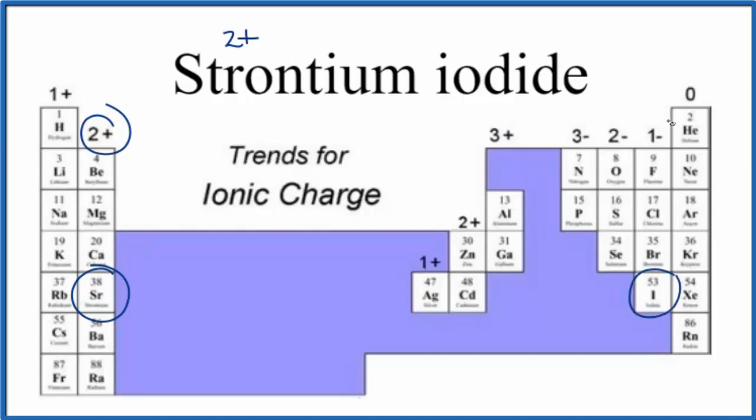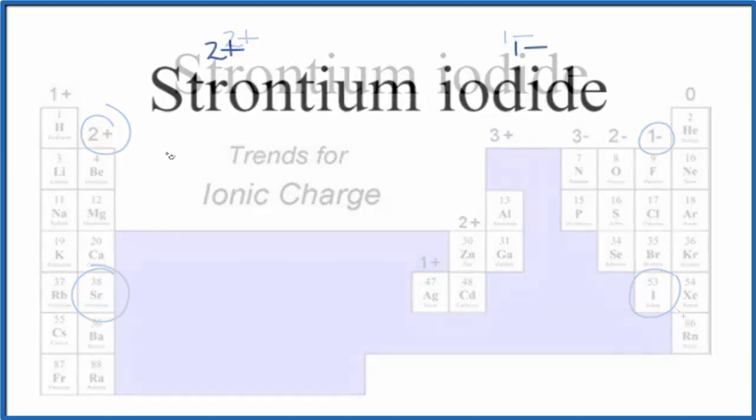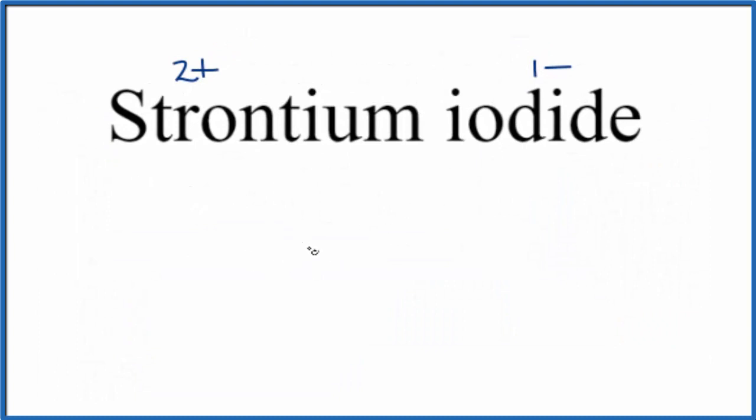So we know the charges. We'll write Sr for strontium and then iodide, that's the iodine, we'll put an I there. We said strontium, that's two plus, that's its ionic charge. The iodine atom is one minus.